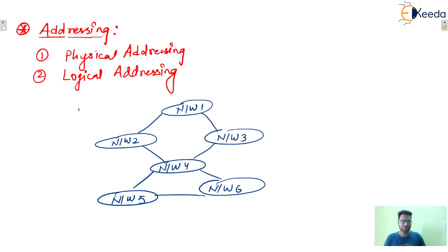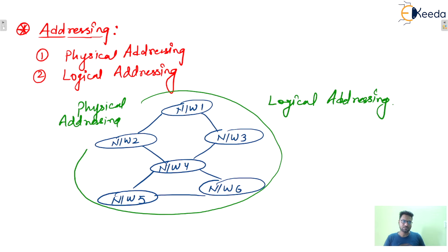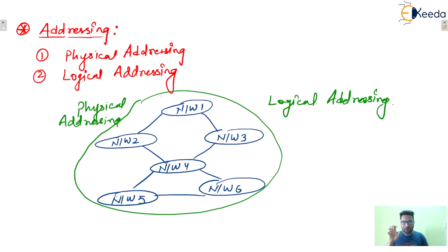Two kinds of addressing: the first one is physical addressing and the second one is logical addressing. So what is the difference between these? Physical address means the address must be unique inside one network.